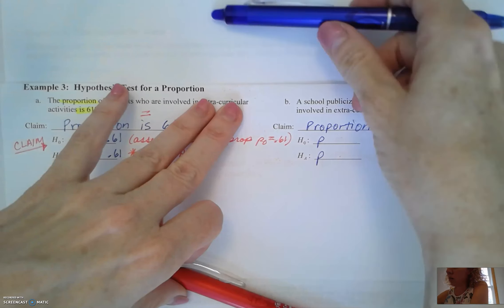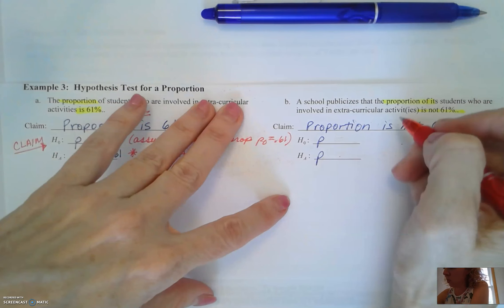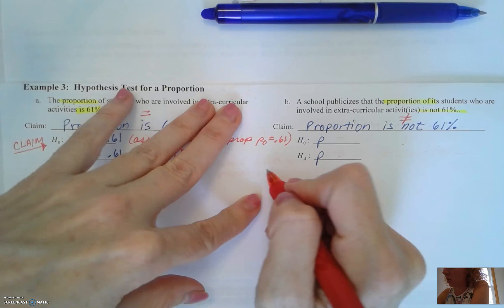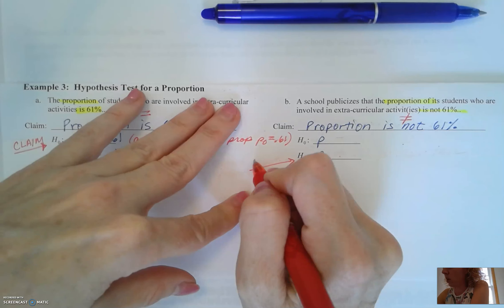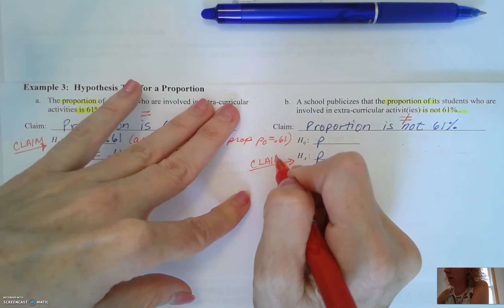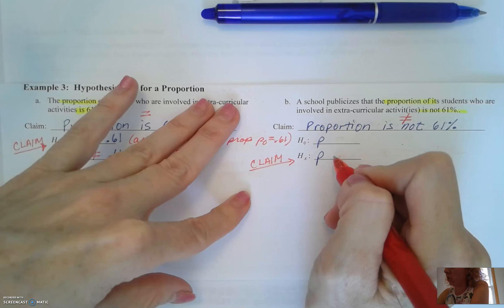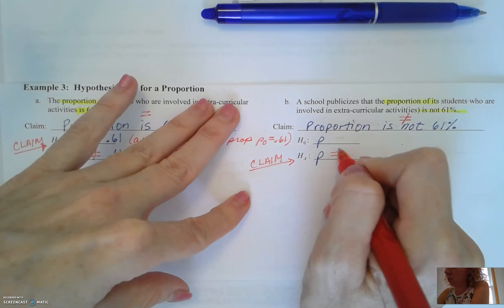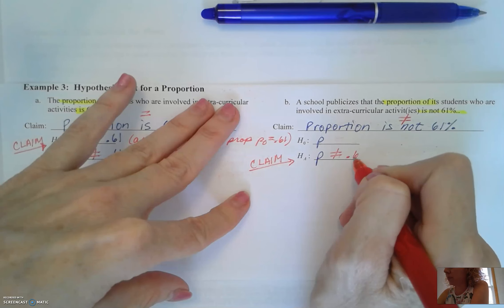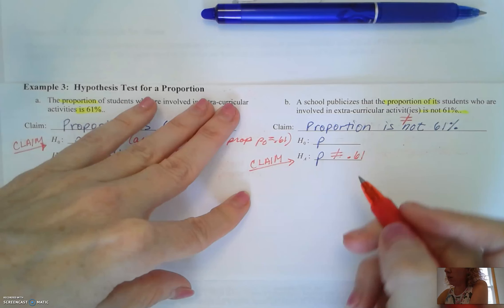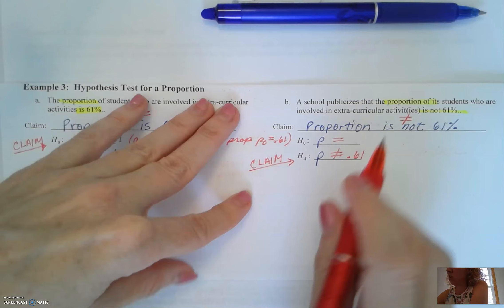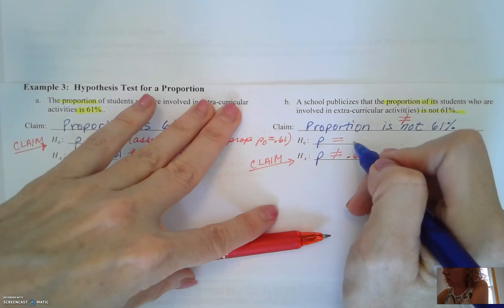So our proportion is going to again use the P symbol. Is not equal to is going to use the not equal to symbol and that means our claim is now going to go with our alternative hypothesis. So H sub A should be P is not equal to 0.61. That means our H sub 0 is going to contain equality so it's going to be P equals 0.61.